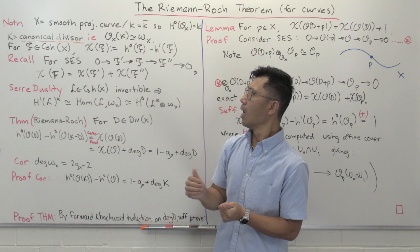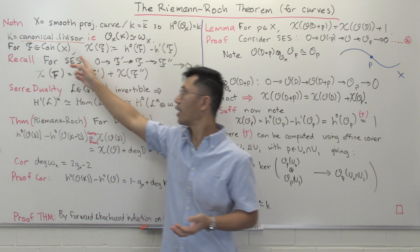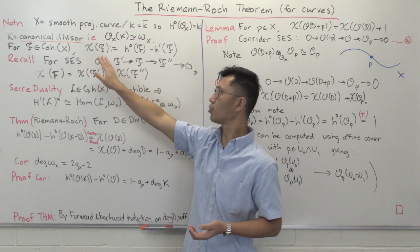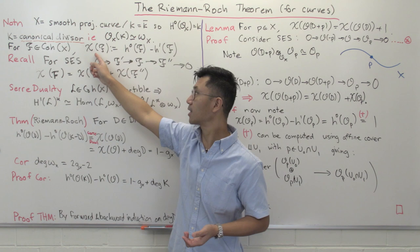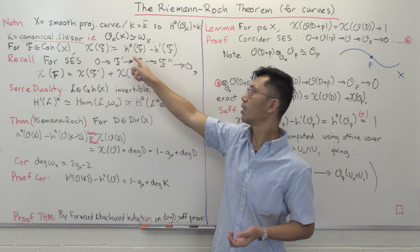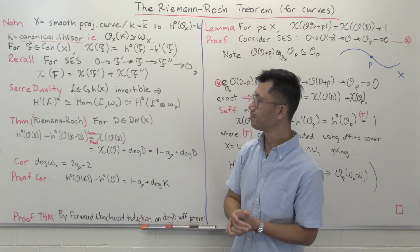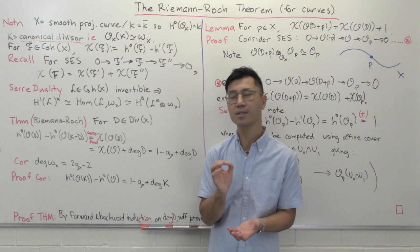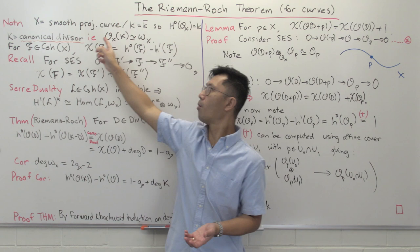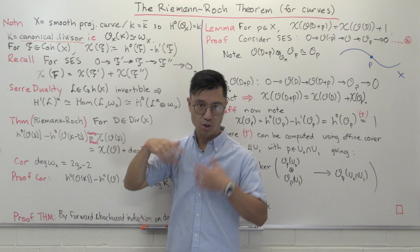We're going to consider some coherent sheaf F. Later we'll restrict to invertible sheaves, but let's look at the general notation. If we have some coherent sheaf F, remember the Euler characteristic chi of F is just little h0 of F minus little h1 of F. These little h's are just the dimensions of the big H's — the dimension of the space of global sections and the dimension of the first cohomology space. The reason why we look at the Euler characteristic is that even though most of the time you're just interested in h0, the best formulae you can get are usually stated in terms of the Euler characteristic.